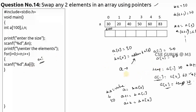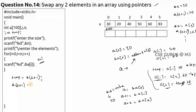Now we write the swap code for a[1] and a[4] using pointers. We take a temporary variable: temp = *(a+1), then *(a+1) = *(a+4), then *(a+4) = temp. Like this we write the swap, and after this you can print the array to observe the result.